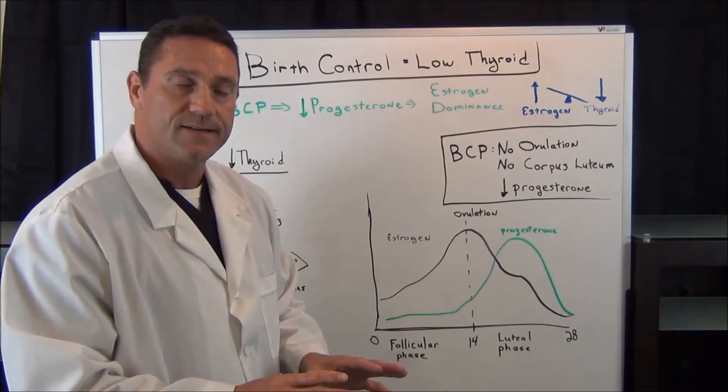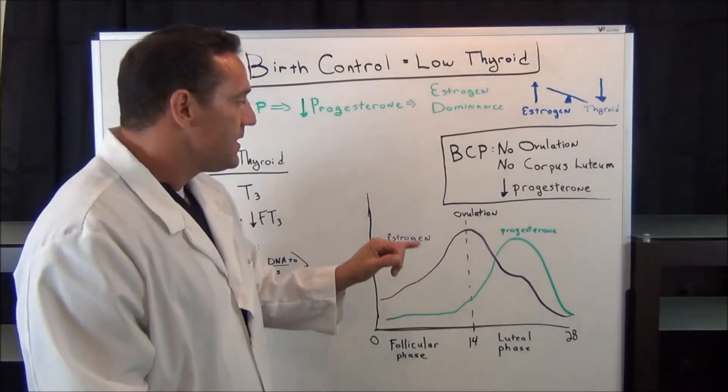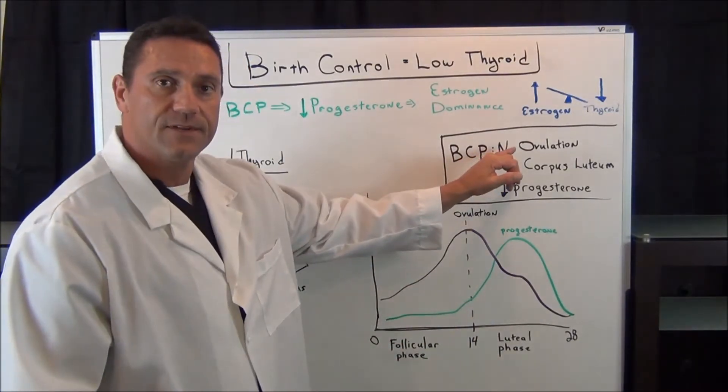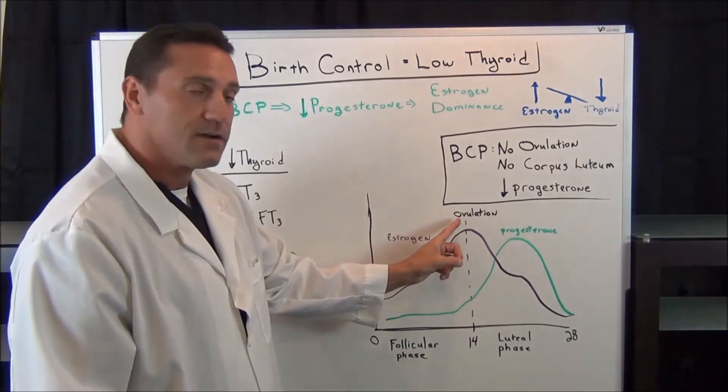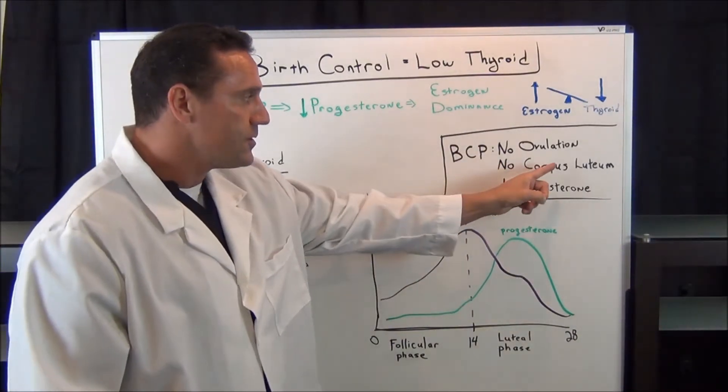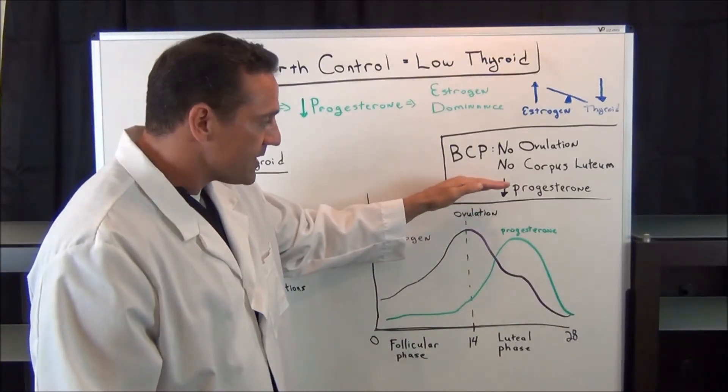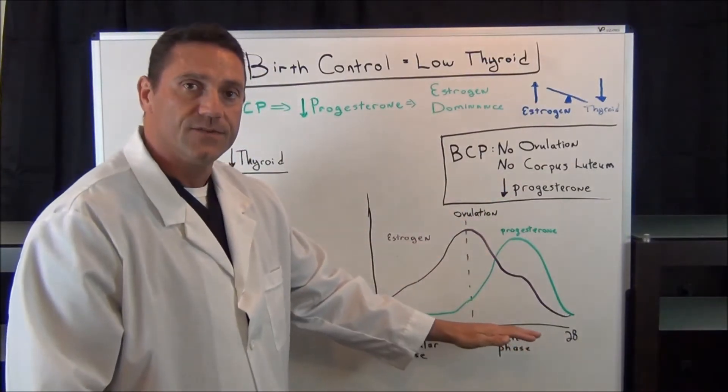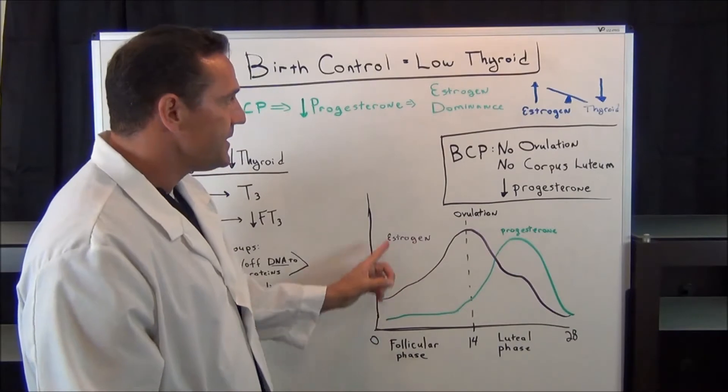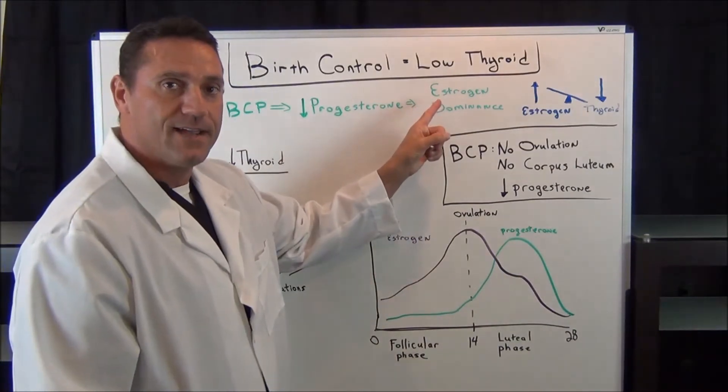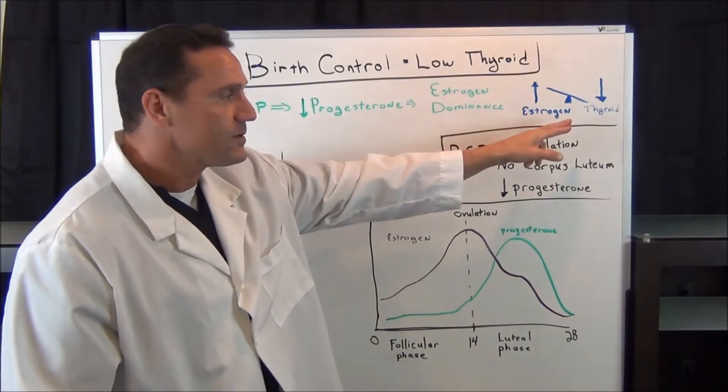However, when you're taking birth control pills, you're tricking your body. So what happens is that you're not going to have any ovulation. No corpus luteum is going to be formed. And you're going to have a decrease in progesterone. So in turn, you're going to become estrogen dominant. And when you're estrogen dominant, it lowers the thyroid function.